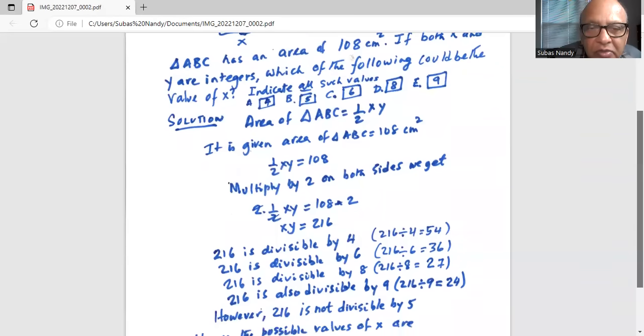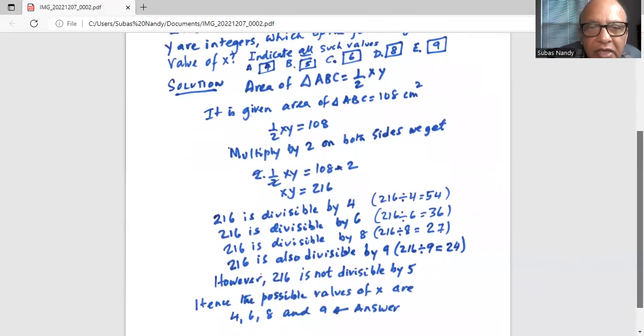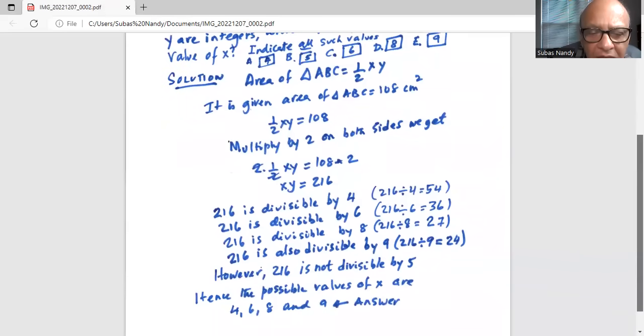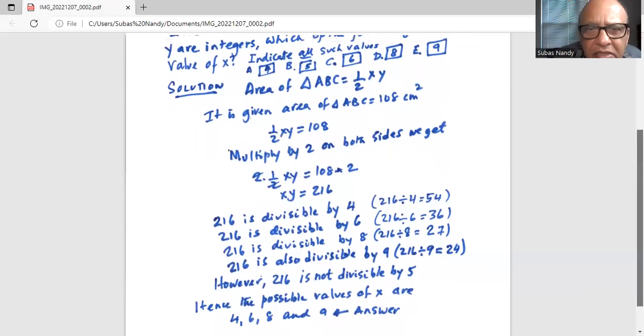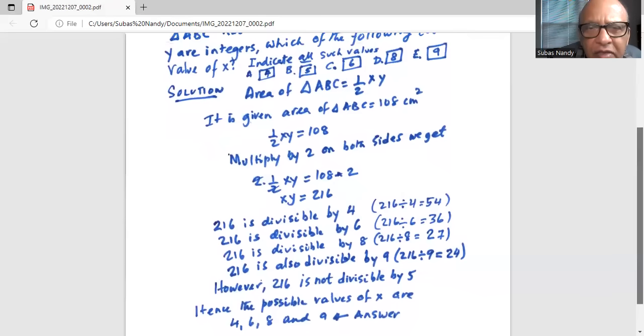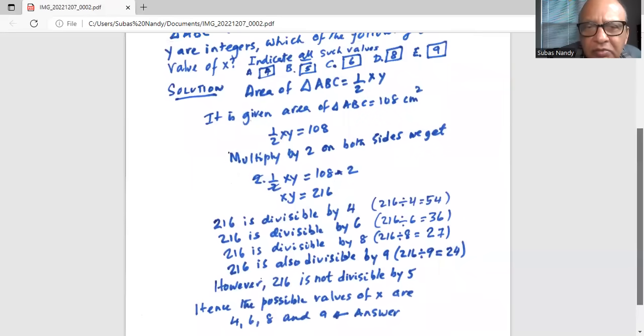So the possible values of x are 4, 6, 8, and 9, which means options a, c, d, and e. These are the correct options.